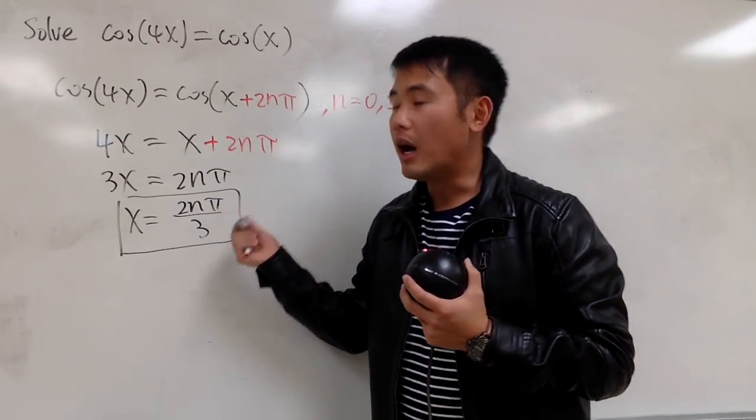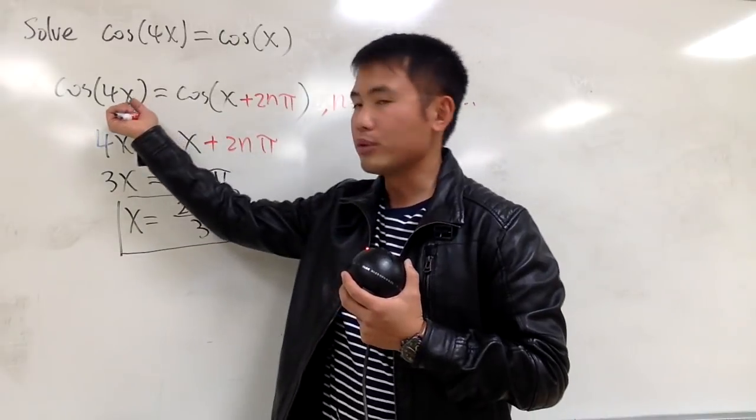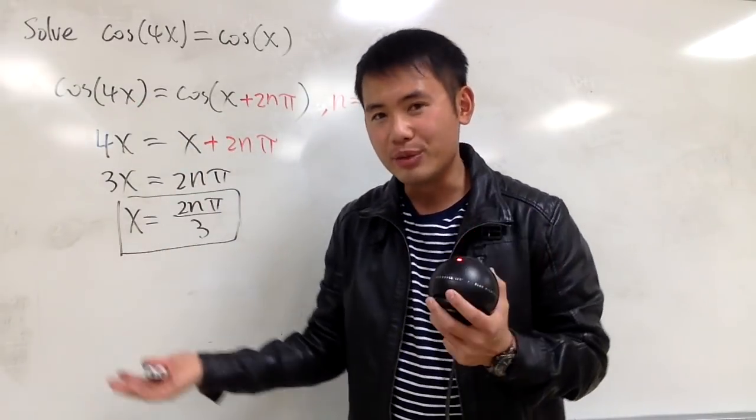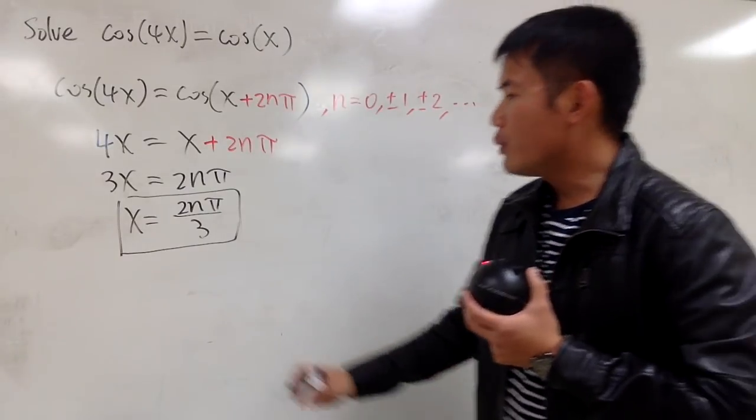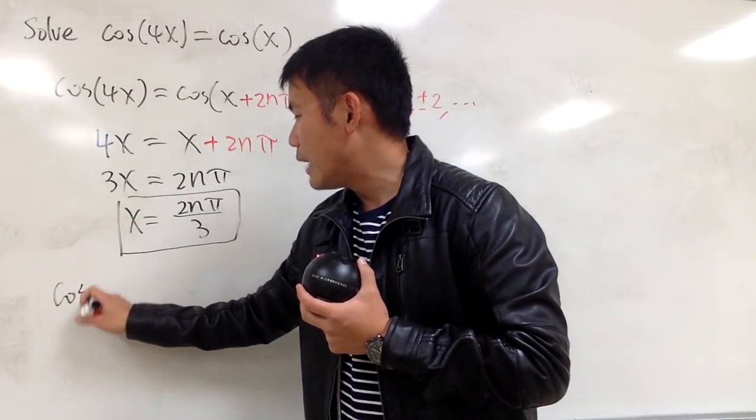And you might also be wondering, how come I didn't add the 2nπ on both sides? The truth is, it doesn't really matter, just pick one side and add it to that, that's all. Anyway, the other thing that I have to do is, I will have to consider, this is only the first part earlier, now the second part is,